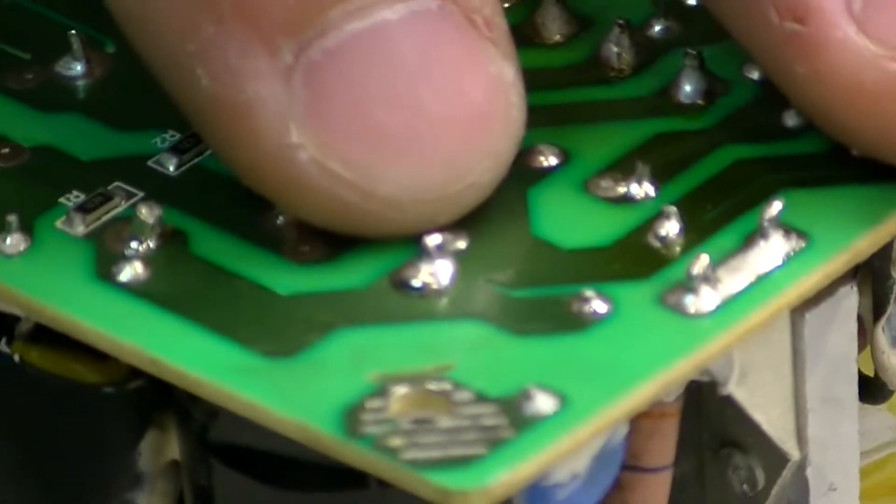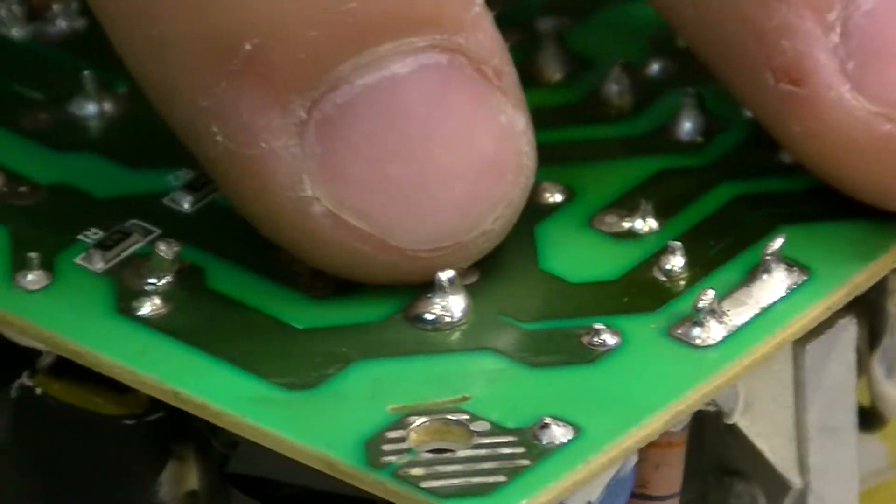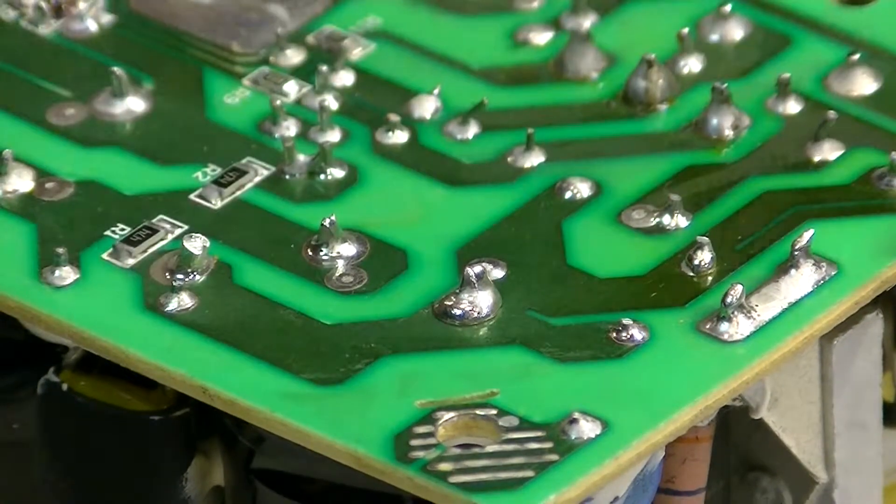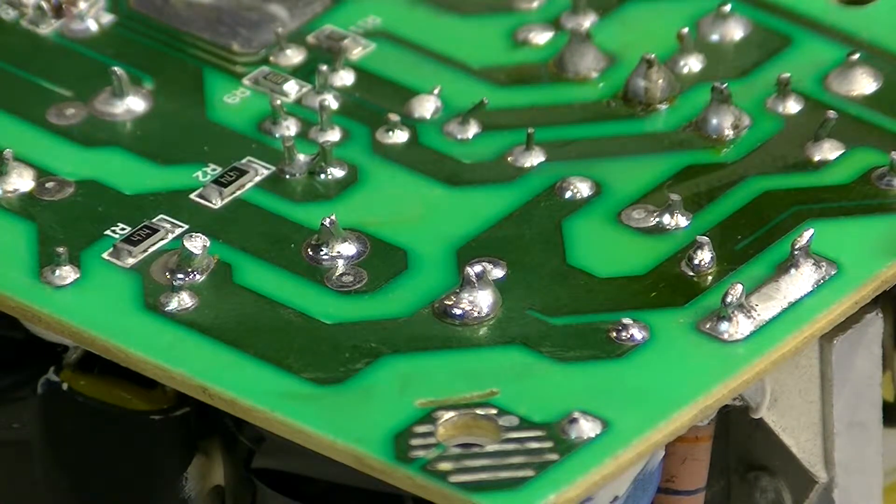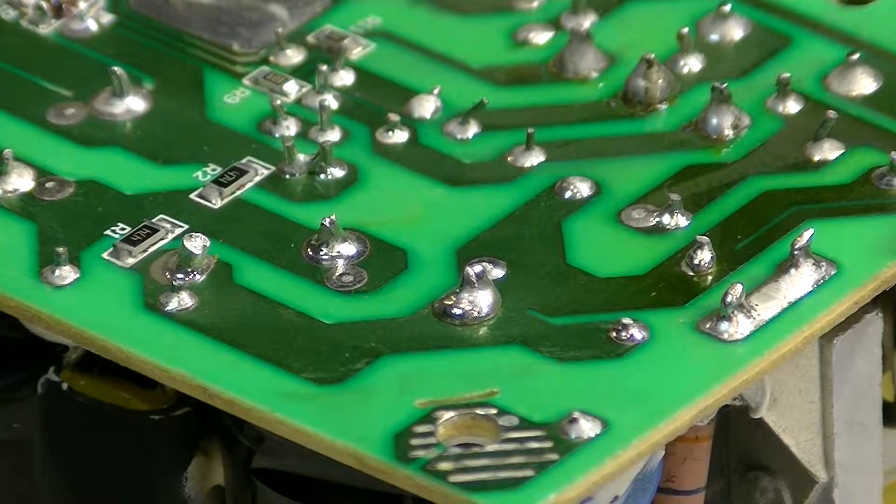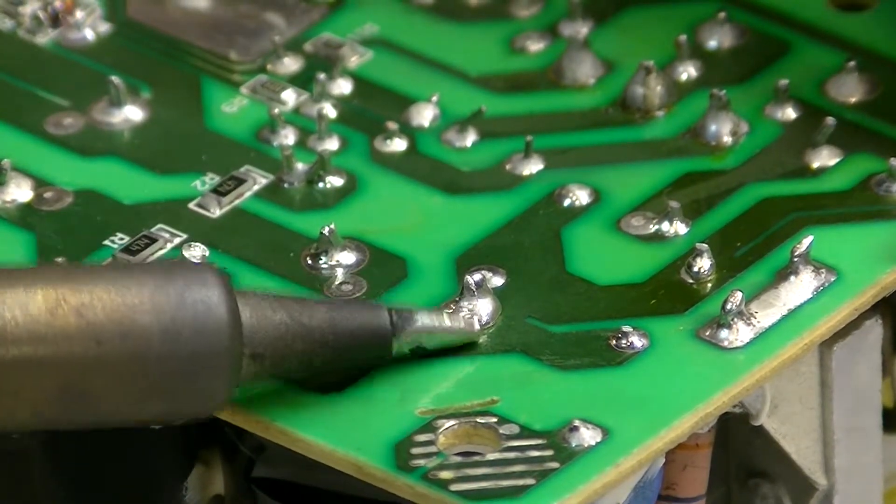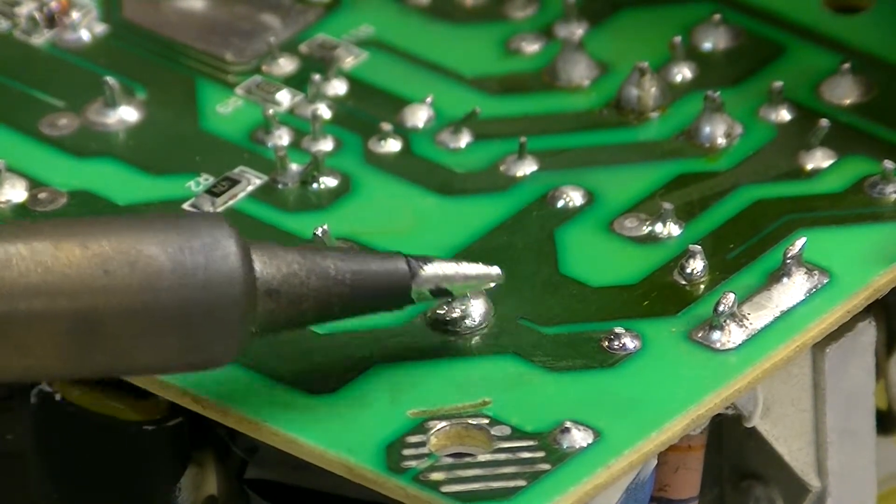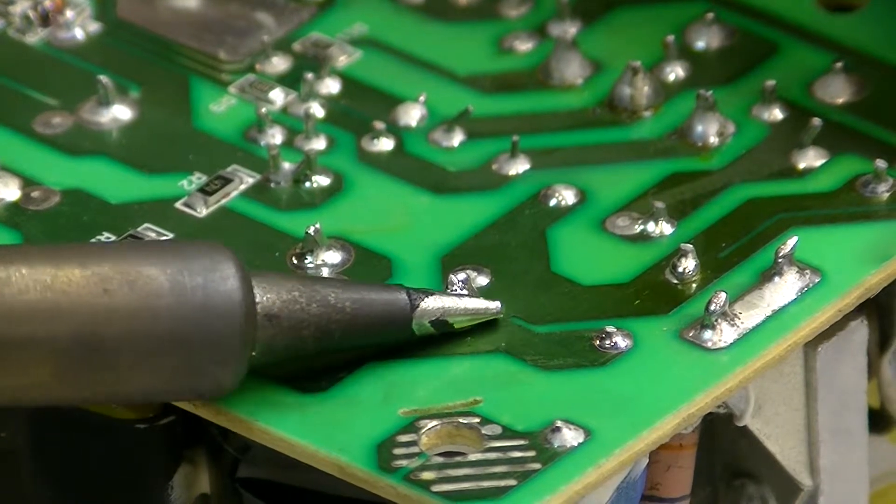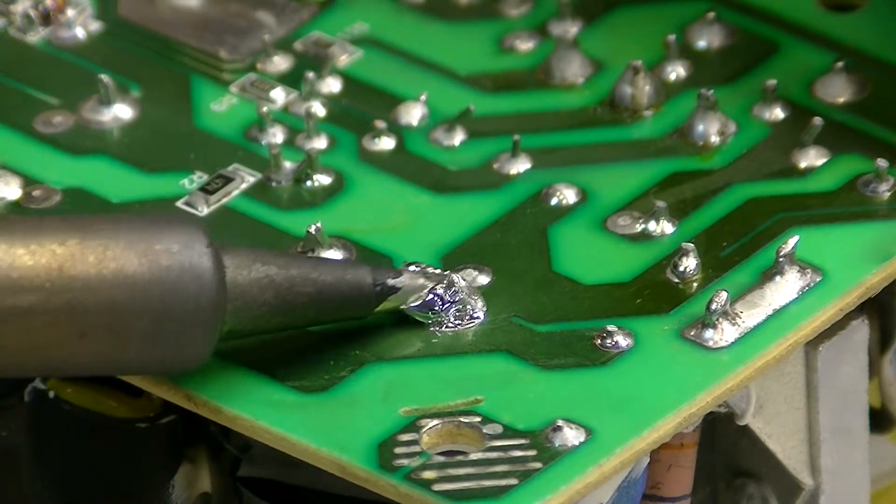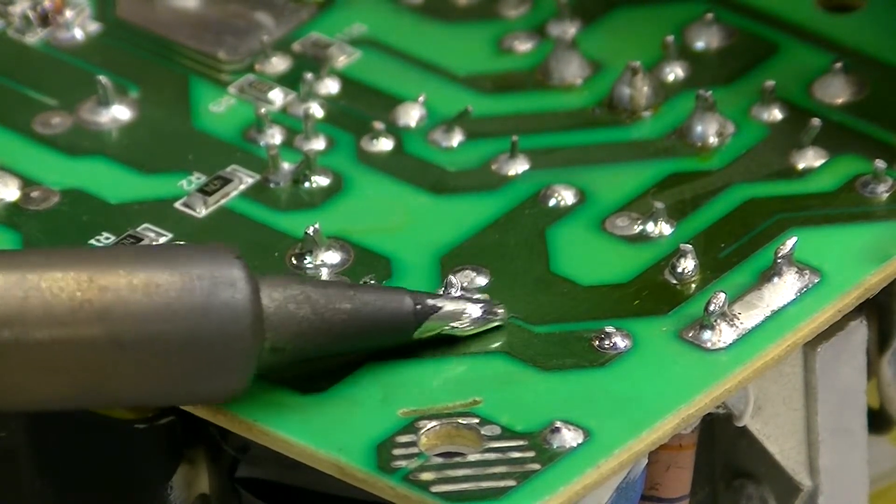So we need to make sure that we get this heated up enough to where the solder sucker will just suck up any excess solder. Assuming that we could go back to the video on the capacitor, like I said not all things are going to work 100%. In that case the solder wick worked perfectly and we didn't really need to use the solder sucker.